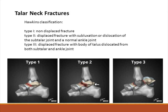The talus is most commonly fractured by two methods. The first is hyperdorsiflexion, where the neck of the talus is forced against the tibia and fractures. The Hawkins classification is used based on the degree of displacement. With these fractures, there is a high risk of avascular necrosis. The second is jumping from a height, where the talus transmits the force from the foot to the lower limb bones.